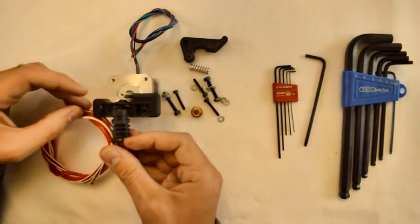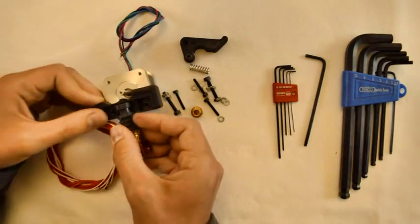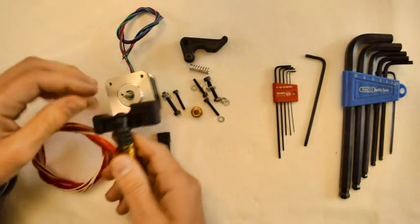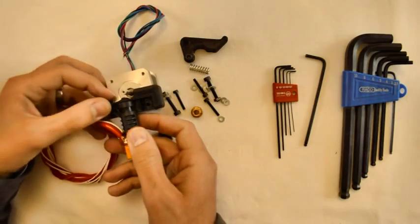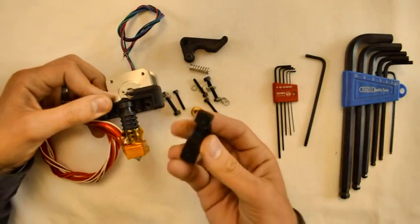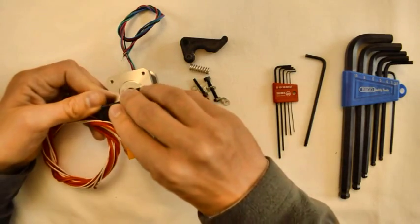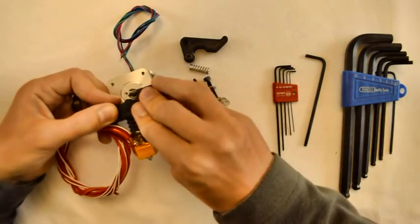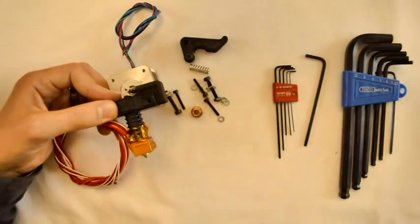Now we'll insert our hotend into the position. That goes there, and then this component is the clamp that goes over the hotend and keeps it in place.